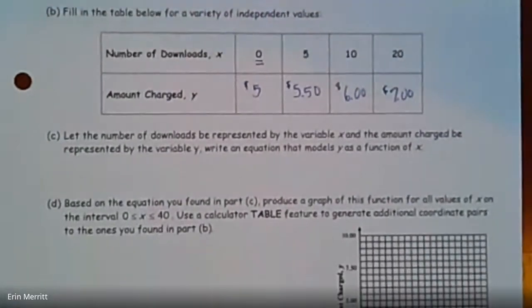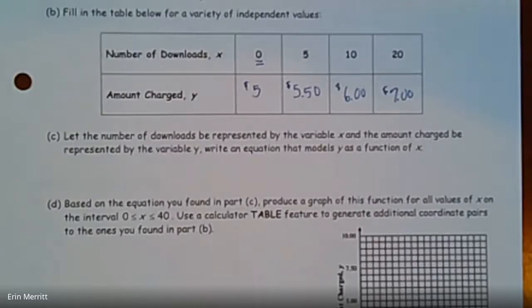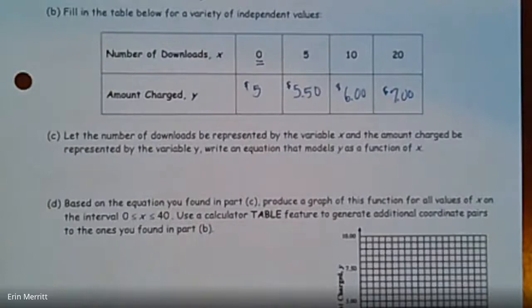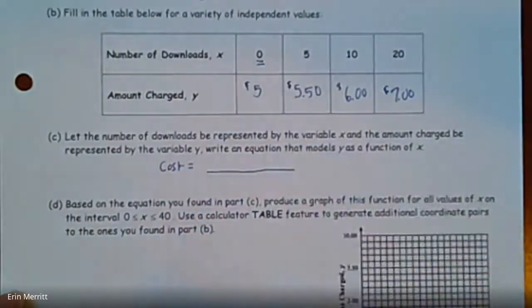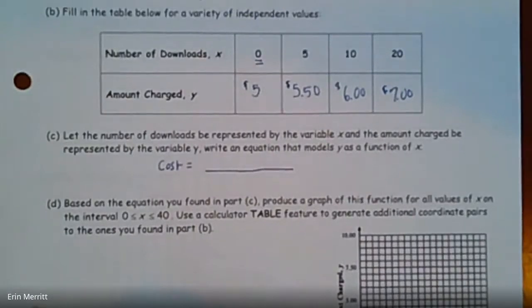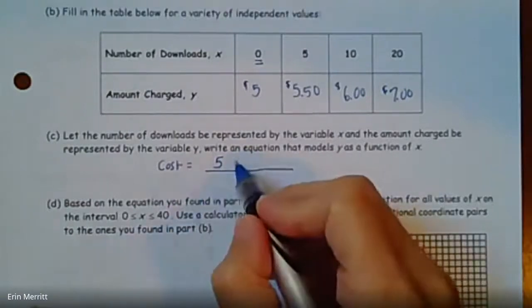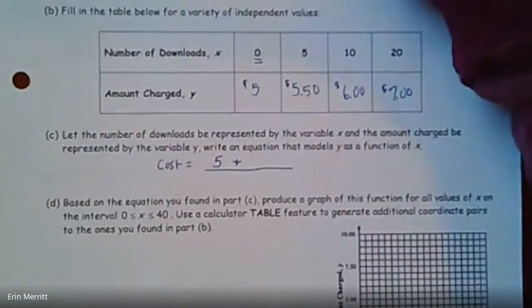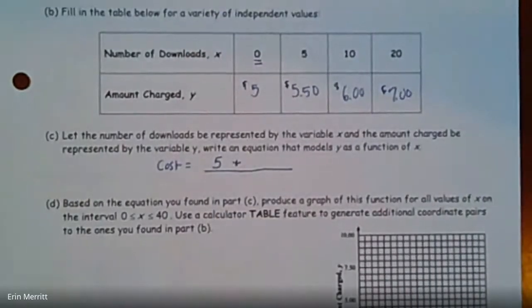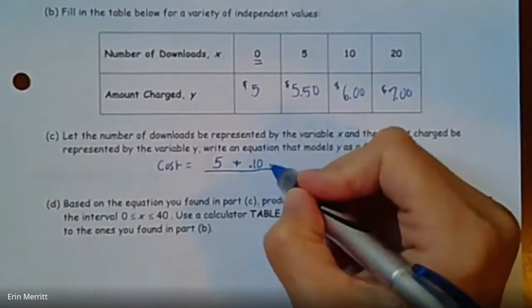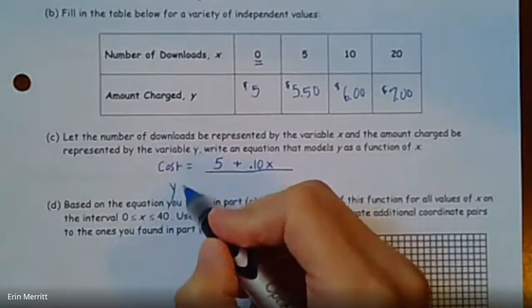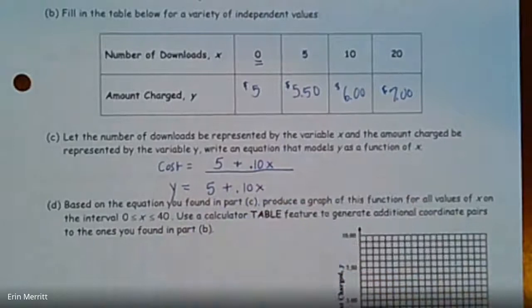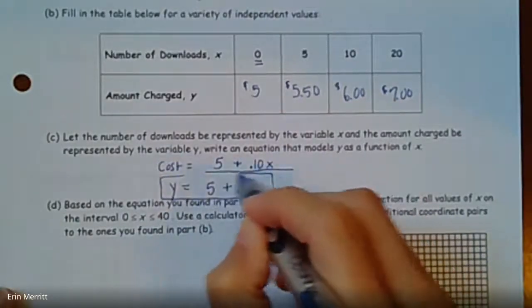The next part, when it says, let the number of downloads be represented by the variable X and the amount charged be represented by Y, write an equation that models it. So what I want you to think of is it costs how much based on the number of downloads. So you want to think it's going to cost you $5, no matter what, and then plus how much on top of that. So think about it for a second. So $5 and then it should be 10 cents per song. So keep in mind, 0.10 and then times X. So Y would be equal to 5 plus 0.10X.